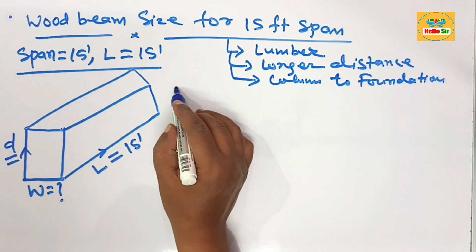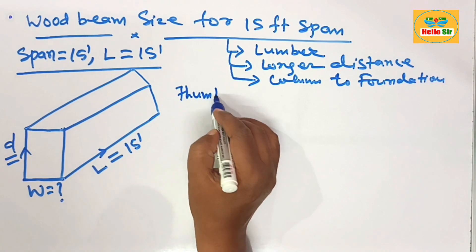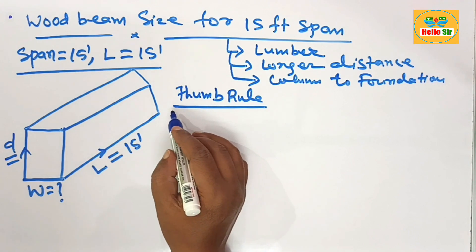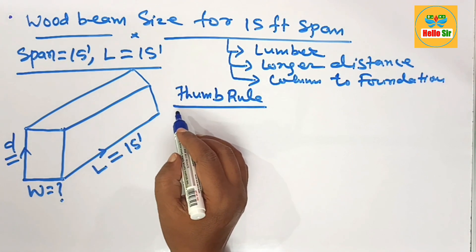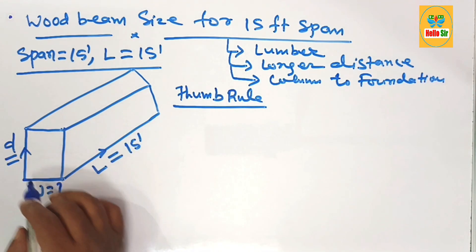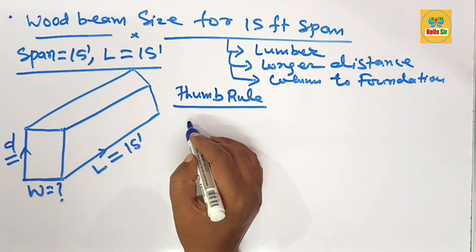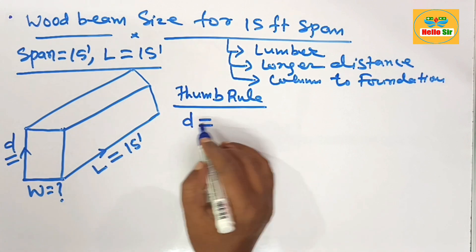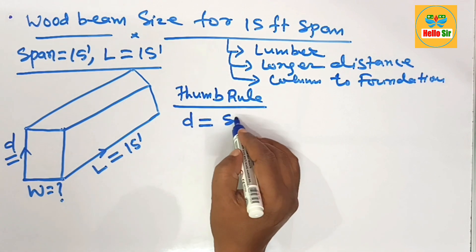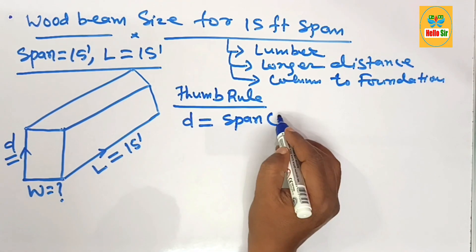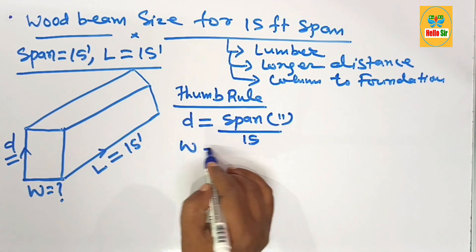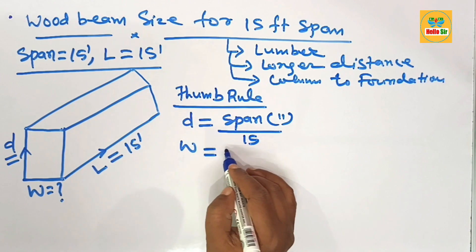Here we'll find out wood beam size as per the thumb rule. What is the thumb rule for sizing the wood beam for a specific span? First, we find the depth section of the beam. As per thumb rule, divide your span in inches by 15—this is the depth section of the beam. The width section of the beam equals one-third or half of the depth section of the beam.